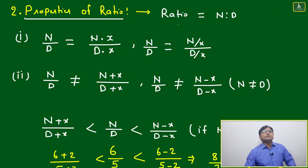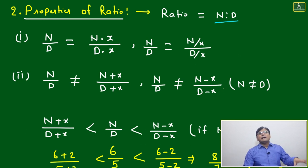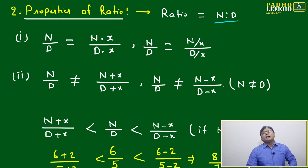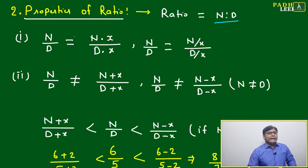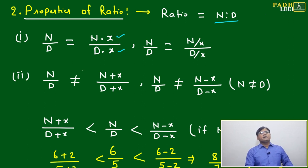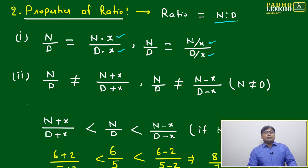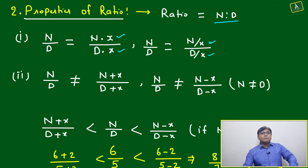Let's look at the properties of ratios. We take a ratio as n by d — numerator by denominator. If you multiply both numerator and denominator by the same number, the ratio will not change. Similarly, if you divide both by the same number, the ratio will not change.